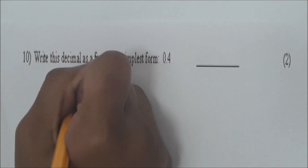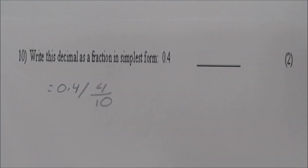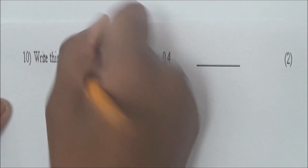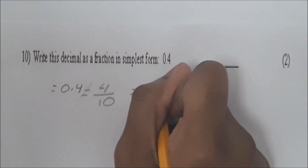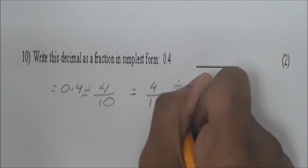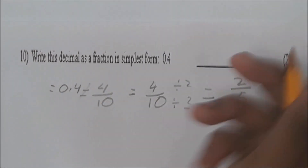Read number 10. Write this decimal as a fraction in simplest form: 0.4. 0.4 is equal to 4 over 10. The reason we put 4 over 10 is because 4 is in the 10th place. Now we're going to reduce 4 over 10 by 2, which is the highest common factor of 4 and 10. So 4 over 10 divided by 2 equals 2 over 5. Very good — you showed all of the steps.